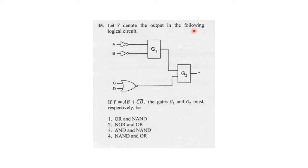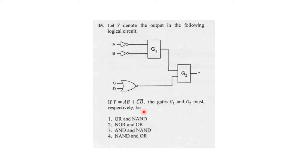Question number 45. Let Y denote the output of the following logical circuit. Here Y is the output. G1 and G2 are the unknown gates — those are the gates we are going to identify. If Y, the output, is equal to AB plus C-bar D-bar, these are two inputs. So there are totally four inputs. The gates G1 and G2 must be respectively — option B.